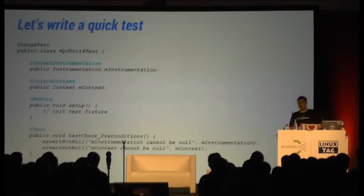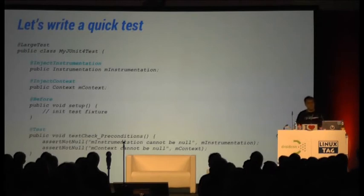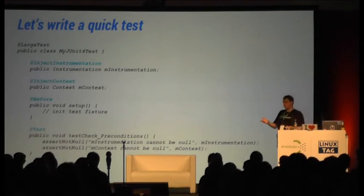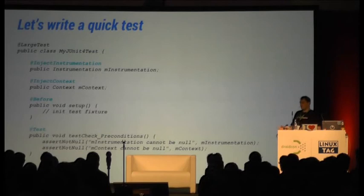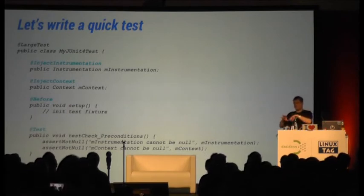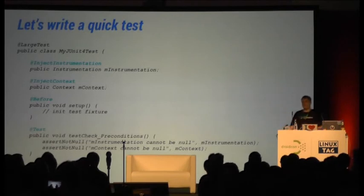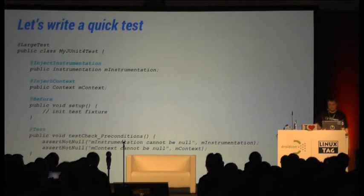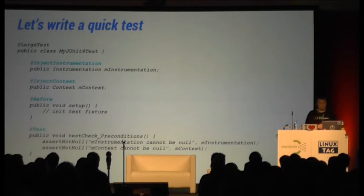How will a test look with the Android Testing Support Library? You can use annotations to inject the instrumentation context, and you can now also use @Before, @Test, @After, and other JUnit4 annotations in your tests. It's still backwards compatible, so you don't have to rewrite all your tests — you can still use JUnit3, but you can also use JUnit4. We're really trying to get this out this year.